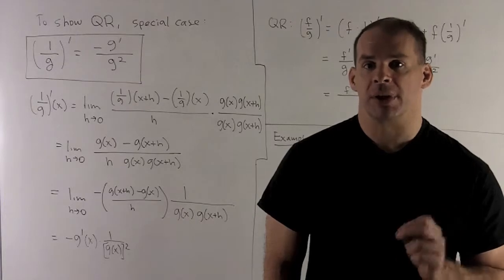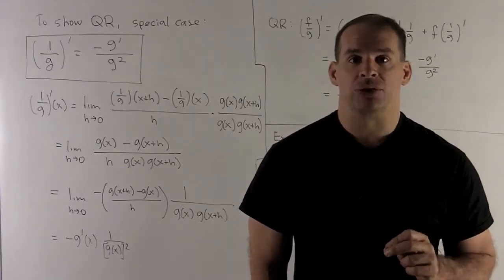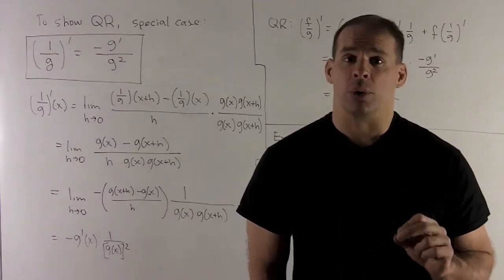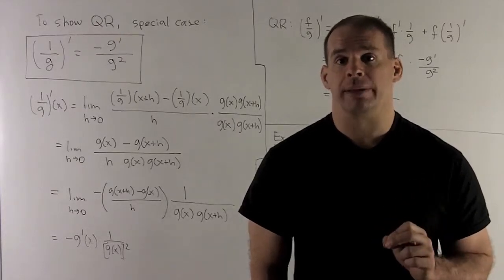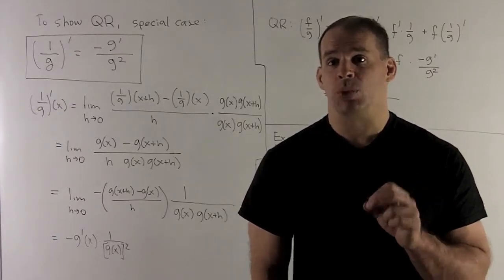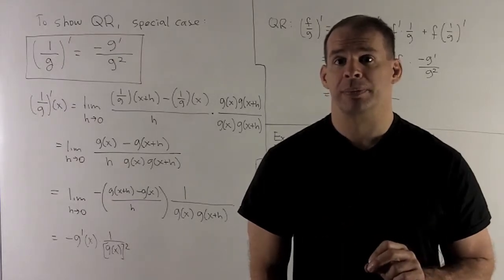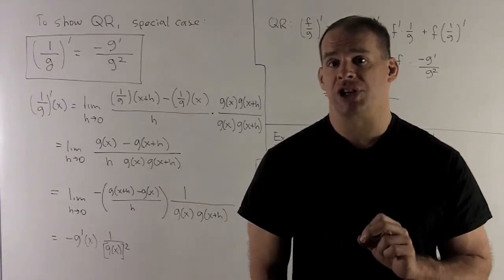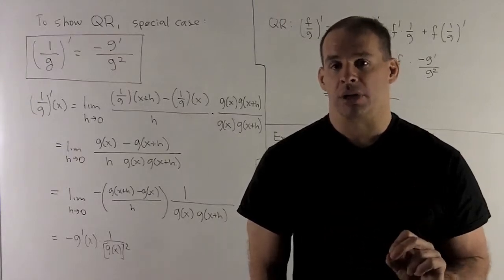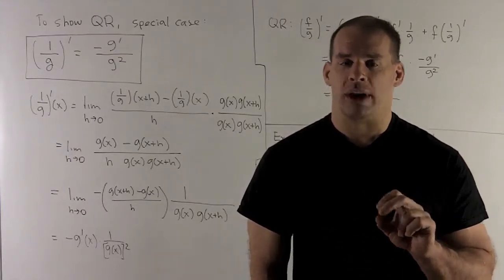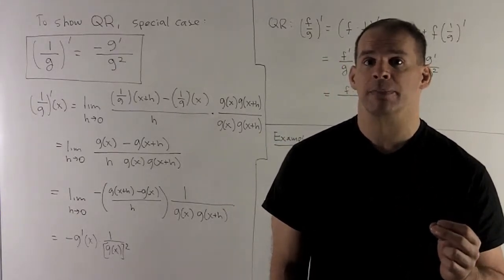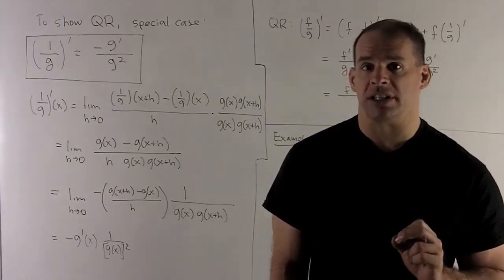Now let's derive the quotient rule. We start with the special case where f = 1: the derivative of 1/g equals -g prime over g squared. Using the limit definition of the derivative, we write the limit as h → 0 of [1/g(x+h) - 1/g(x)] / h. To clean up the fraction within a fraction, multiply top and bottom by g(x)·g(x+h). The numerator becomes g(x) - g(x+h).